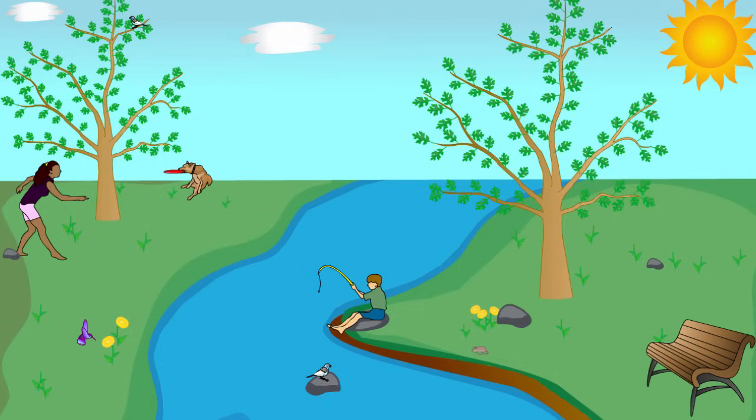But where do we draw the line between living and non-living things? How do biologists specifically define life?